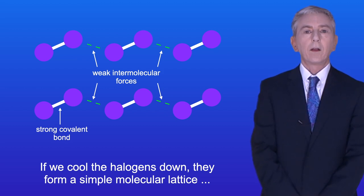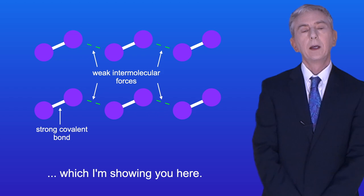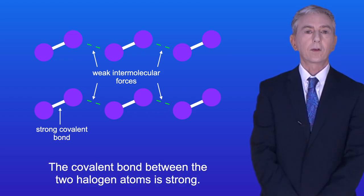If we cool the halogens down, they form a simple molecular lattice, which I'm showing you here. The covalent bond between the two halogen atoms is strong.